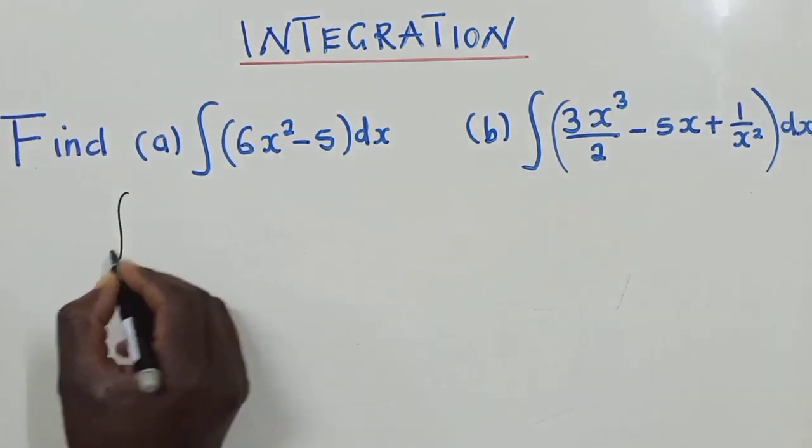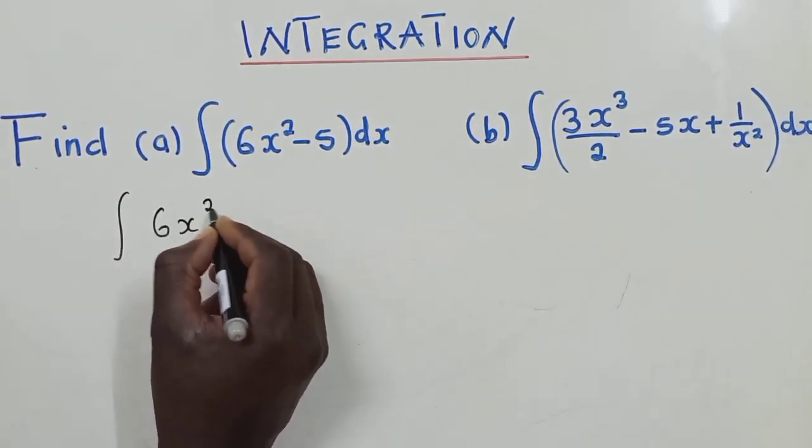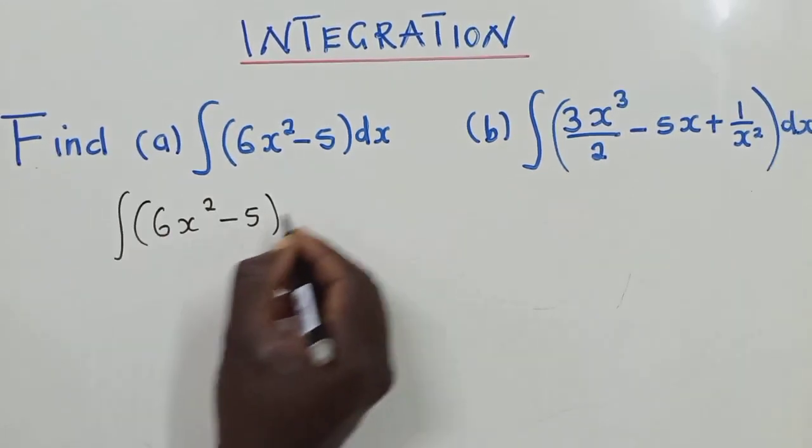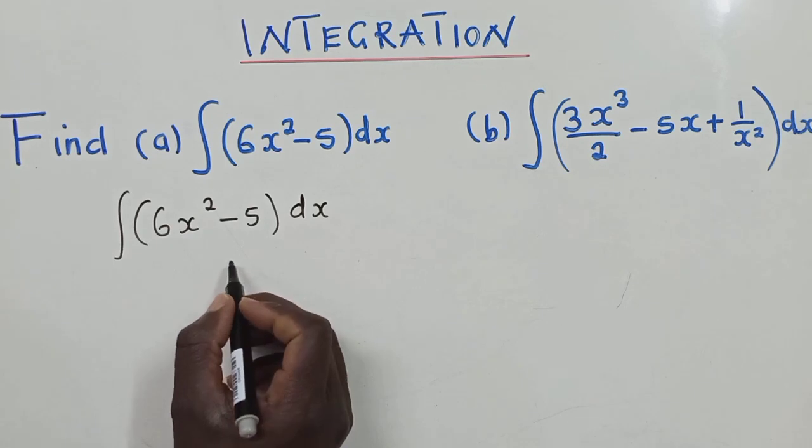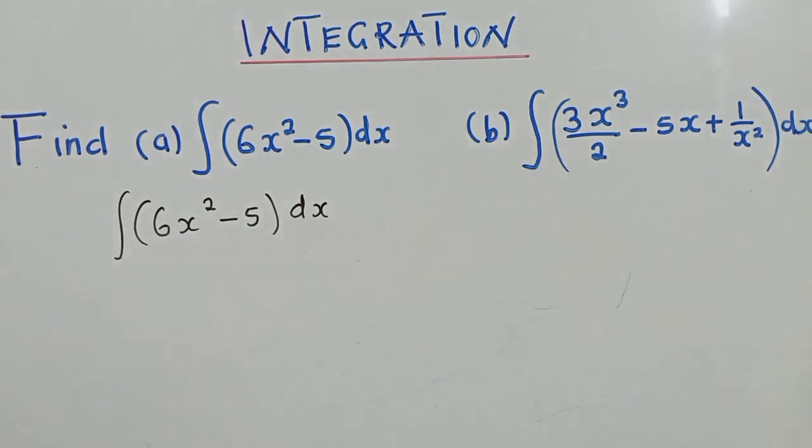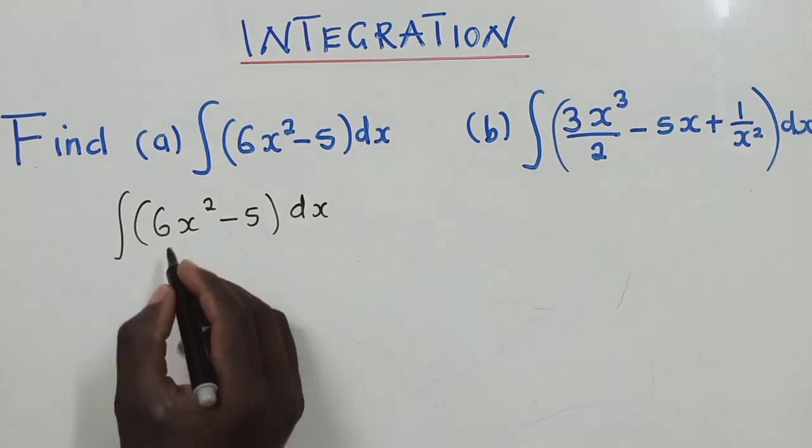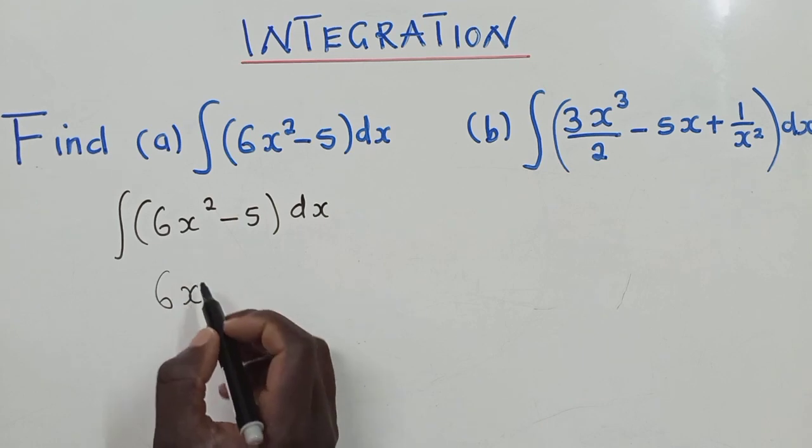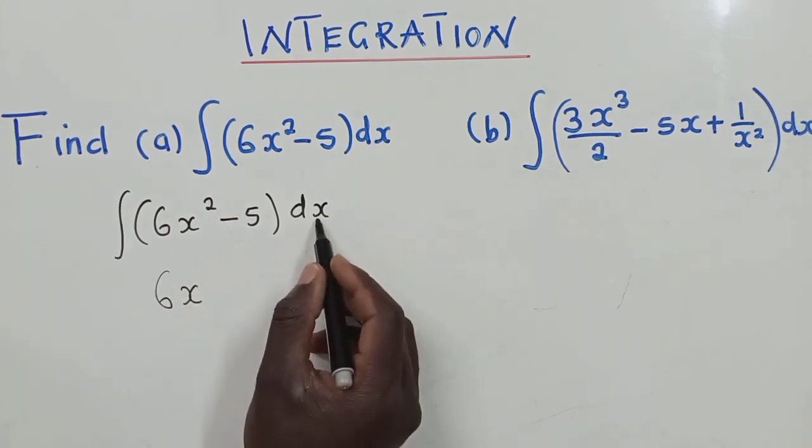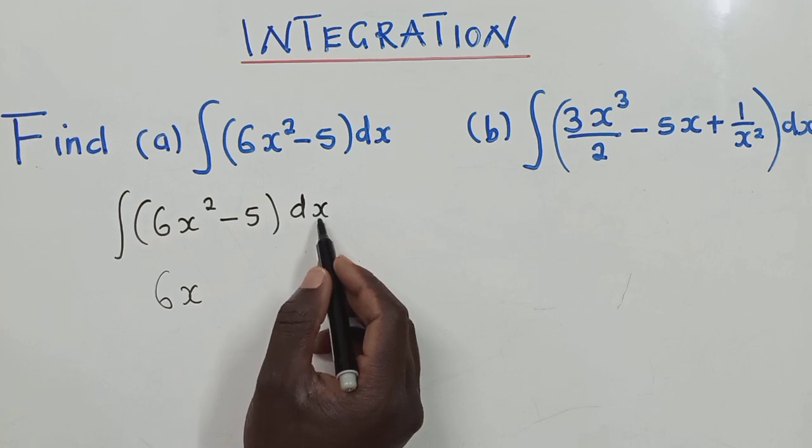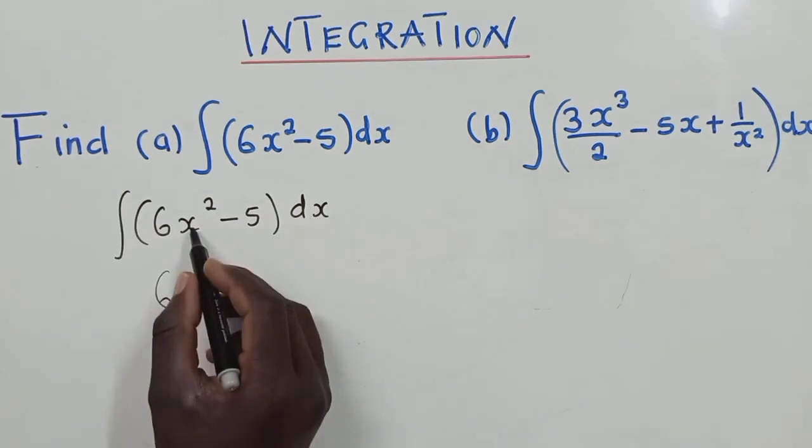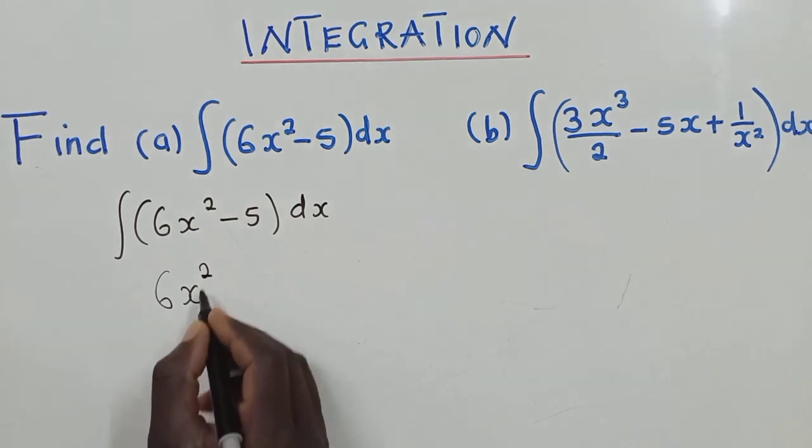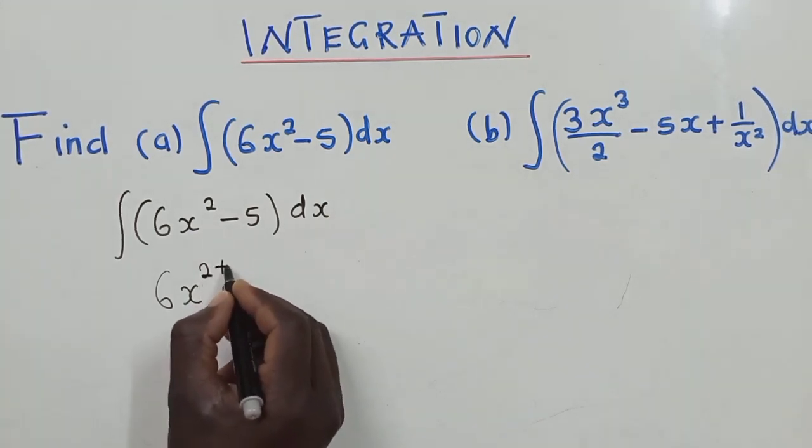So you copy the expression that you've been given. Once you copy there, what are you supposed to do? There are very simple rules that you must put into consideration. Rule number one, check the powers that you have where the letter that you are respecting has. So in this case, X has the power two. So what are you supposed to do to this power?